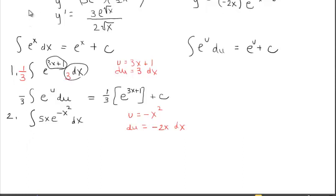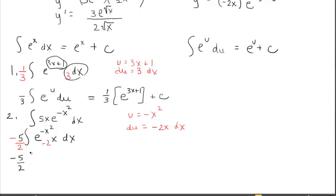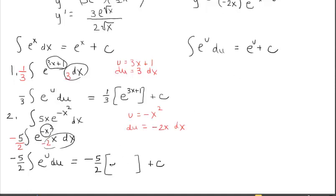The 5 isn't working for me, so I'll pull it out front. I'll also rearrange to put x near dx for a better visual. I need to bring in a negative 2 and take out a negative one-half. Converting — e to the u, then du — working to the right gives negative five-halves. E to the u integrates back to itself, so substituting u back gives the final answer.